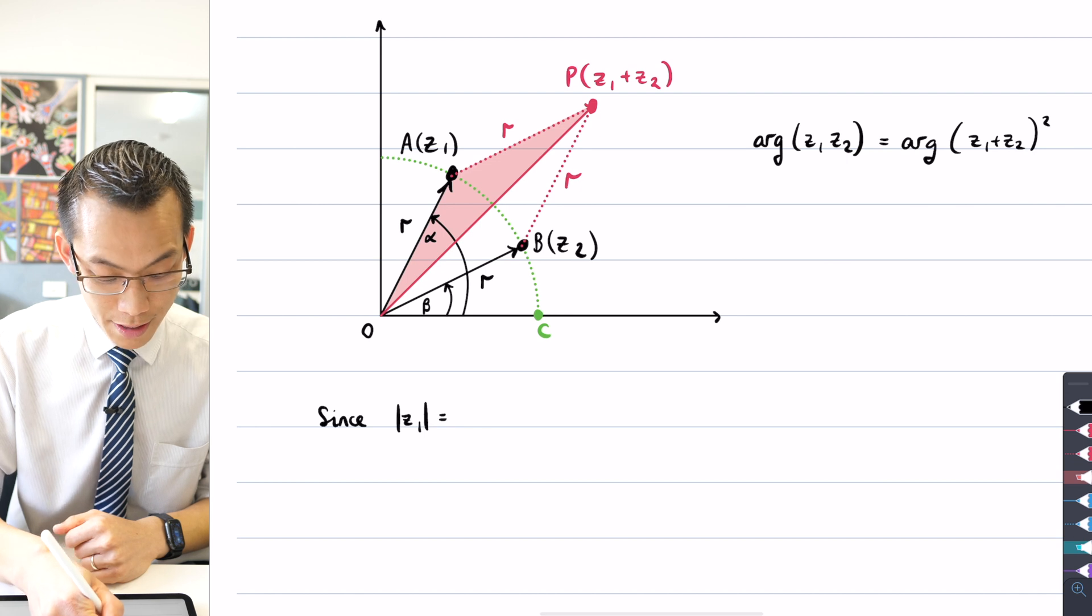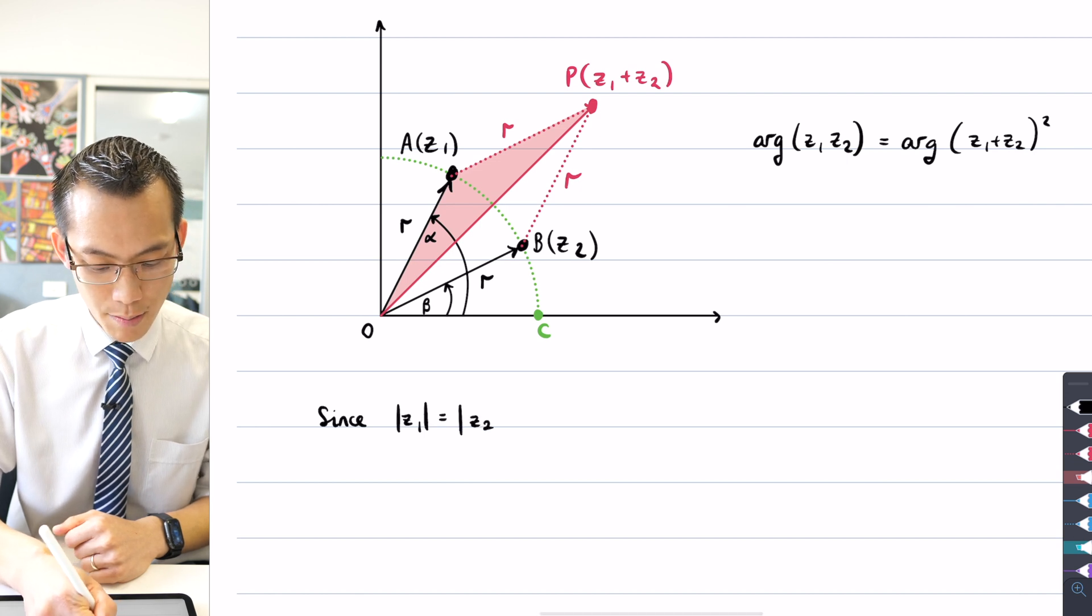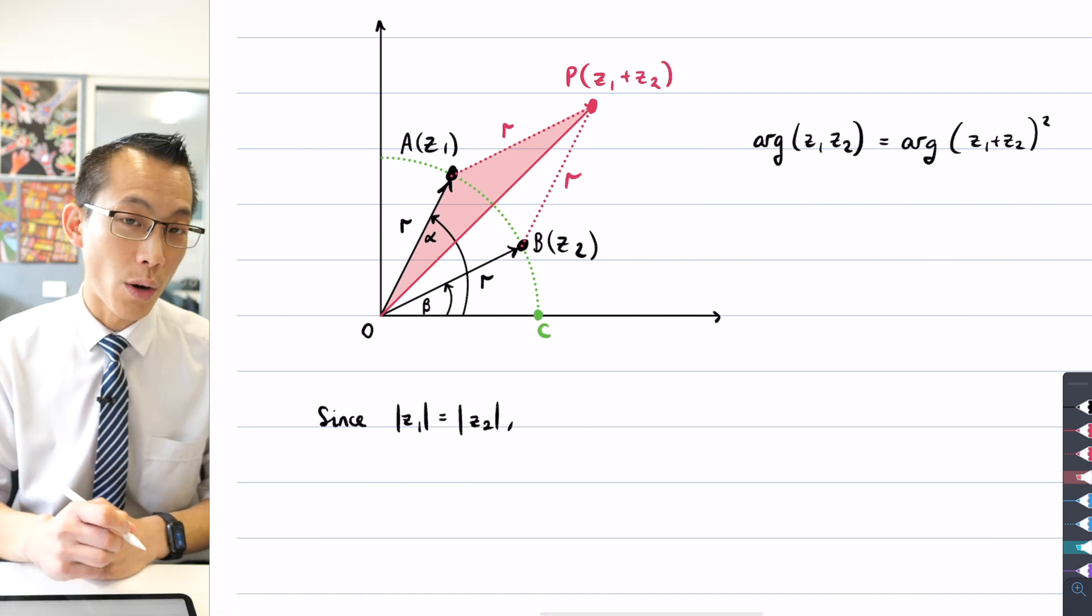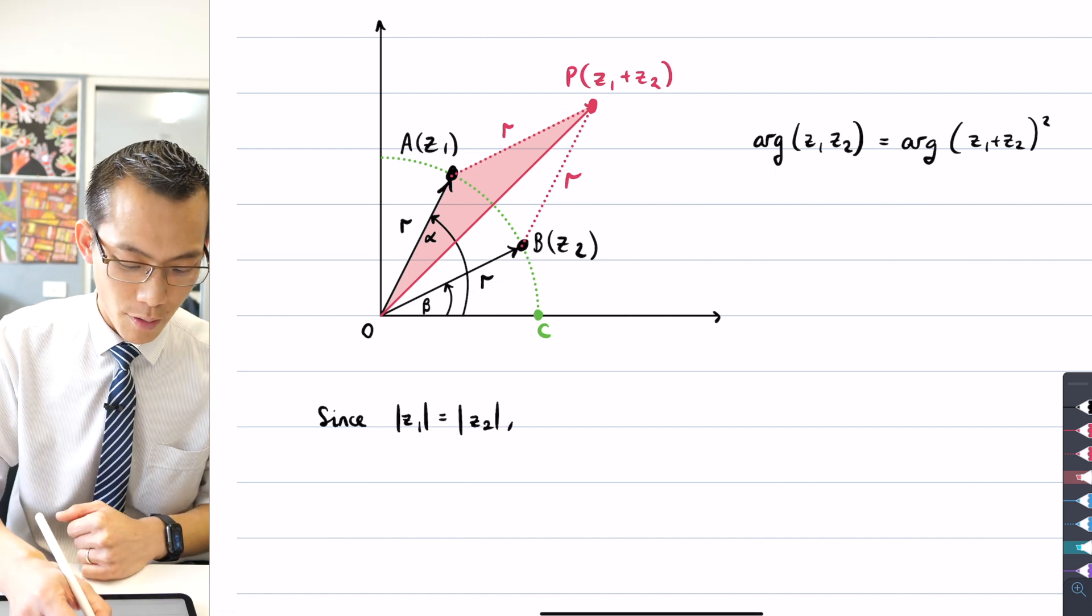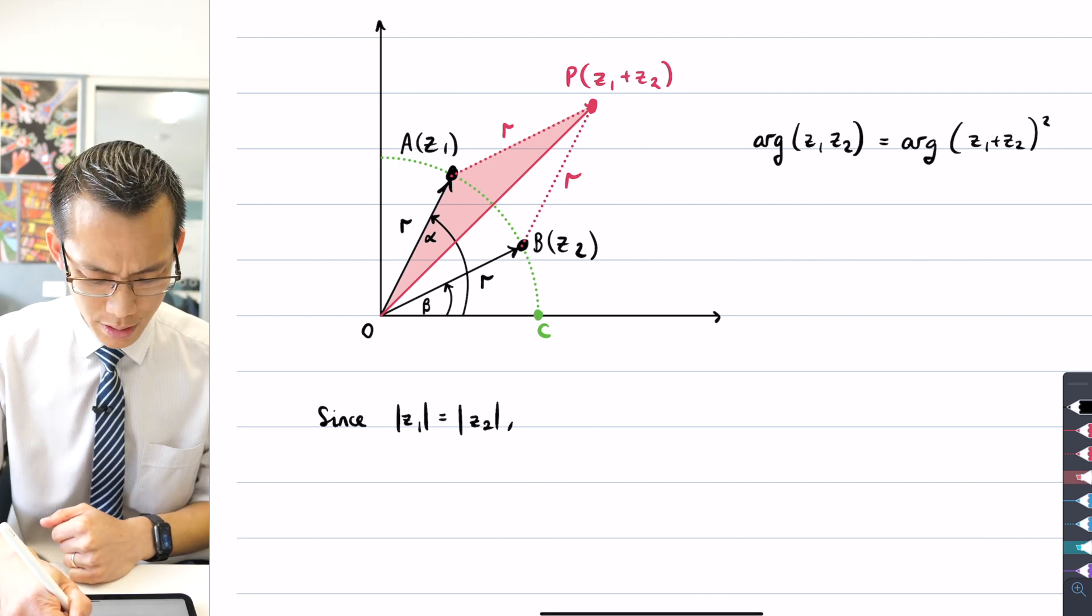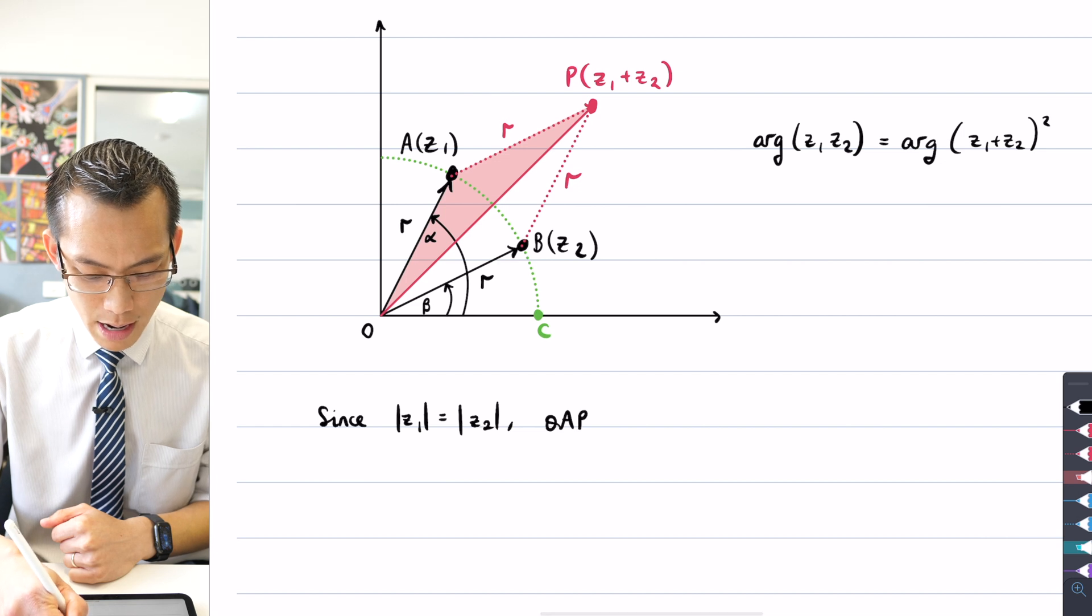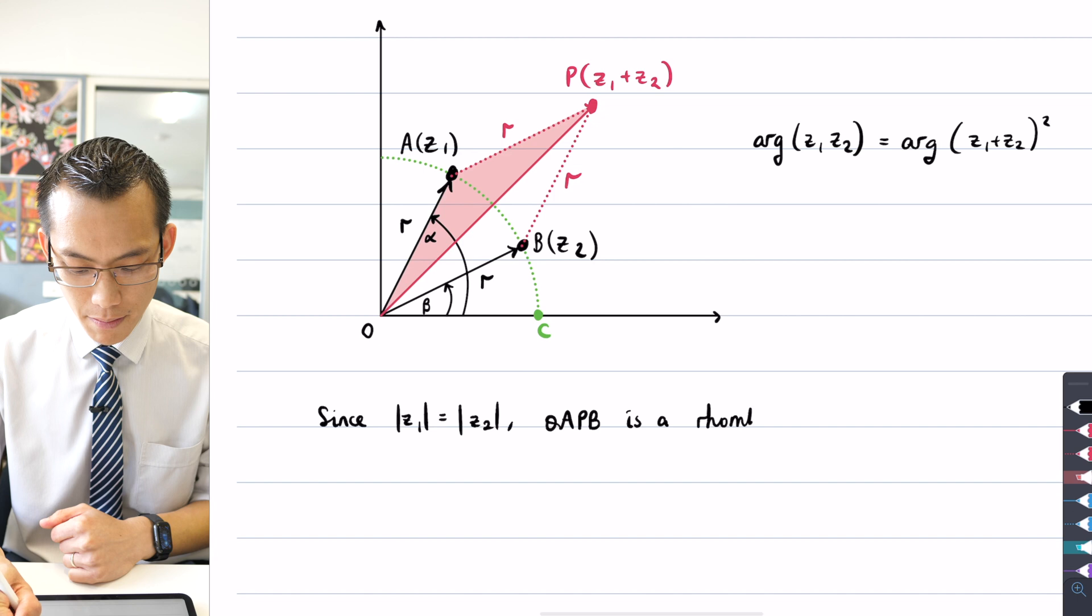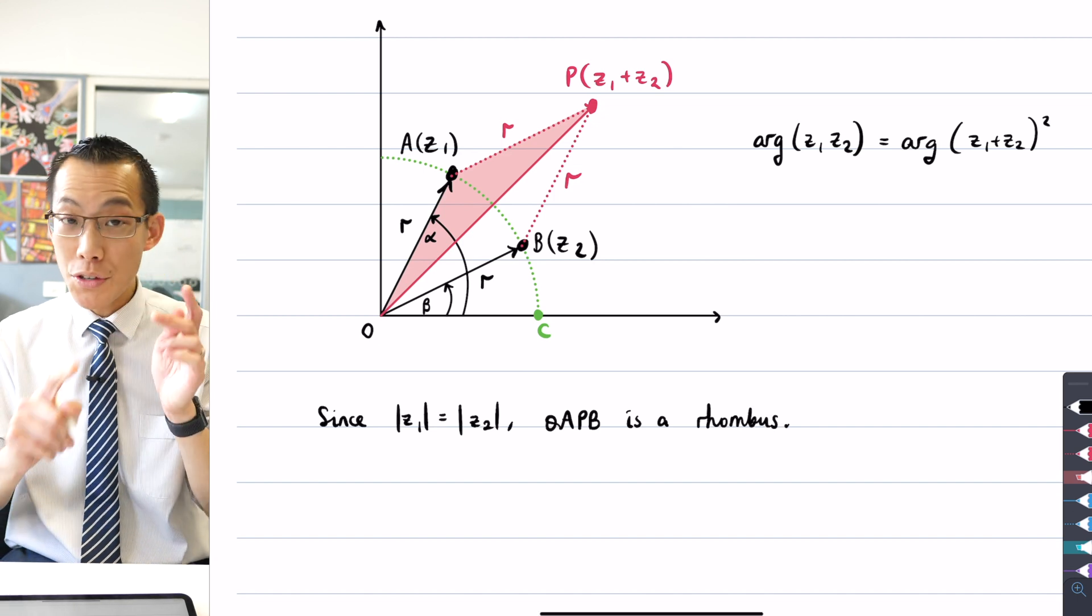Since the modulus of z1 is the modulus of z2, I can say that this shape here is going to be a rhombus because of what I said about all of these sides being equal. So I can say, what's the name of this shape? OAPB is a rhombus. Okay, so that's good.